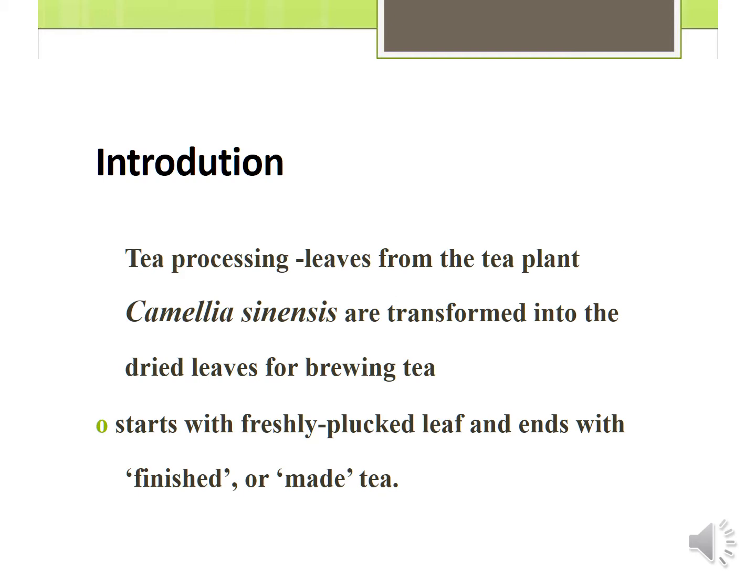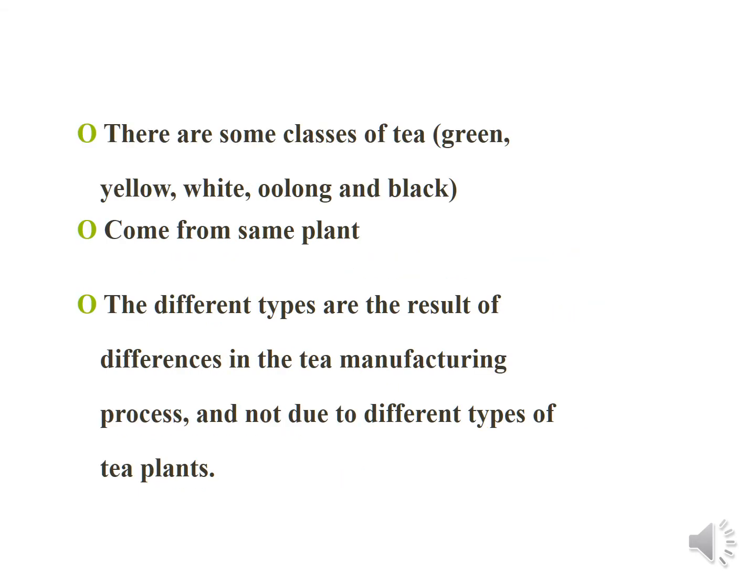The process ends with the finished or made tea. There are some classes of tea: green tea, yellow tea, white tea, oolong tea, and black tea. They all come from the same plant.